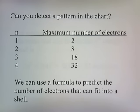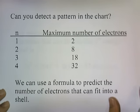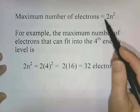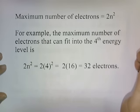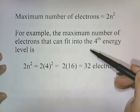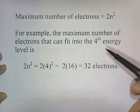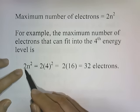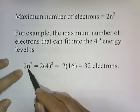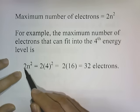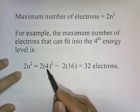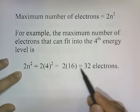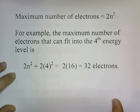We can use a formula to predict the number of electrons that can fit into a shell. The formula is 2n squared. For example, to find the maximum number of electrons that can fit into the fourth energy level, we use the formula: 2 times 4 squared. 4 squared is 16, and 2 times 16 is 32. So we can put 32 electrons into the fourth energy level.